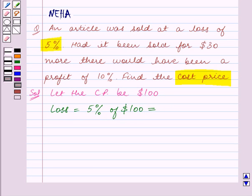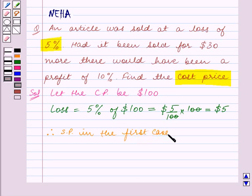to 5 upon 100 into $100. Zeros get cancelled and this is equal to $5. Therefore, selling price in the first case is equal to the cost price which is $100 minus loss which is $5.